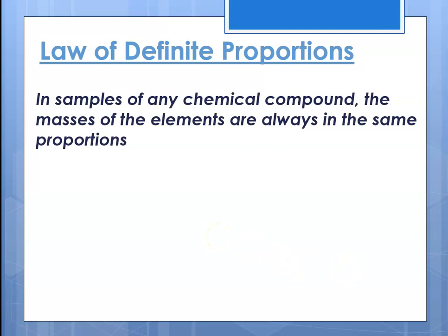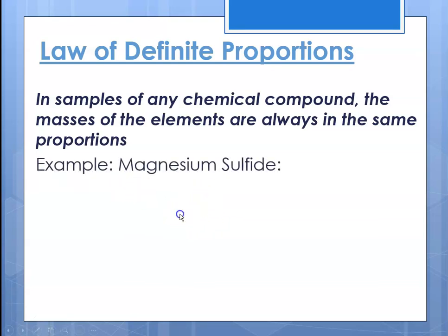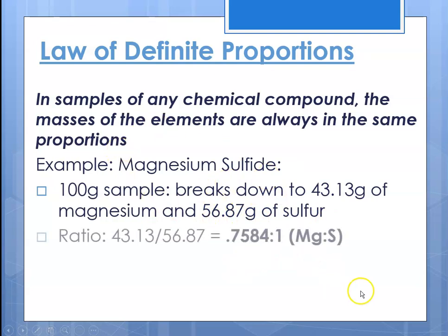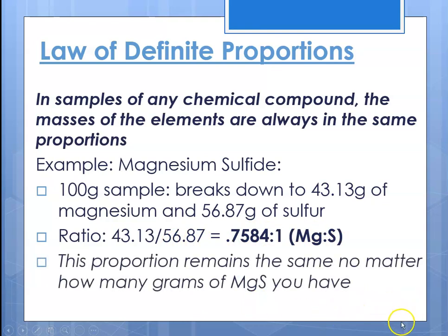If you have a sample of sodium chloride, there's always going to be one sodium to every one chlorine. For example, magnesium sulfide: a 100-gram sample breaks down to 43.13 grams of magnesium and 56.87 grams of sulfur. No matter what size sample you have, that ratio of 43.13 to 56.87 of magnesium to sulfur is always the same — whether you have one gram or a million grams.